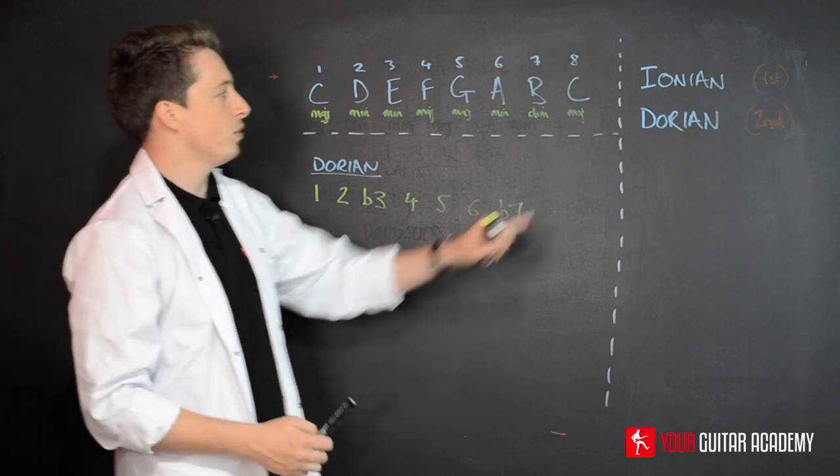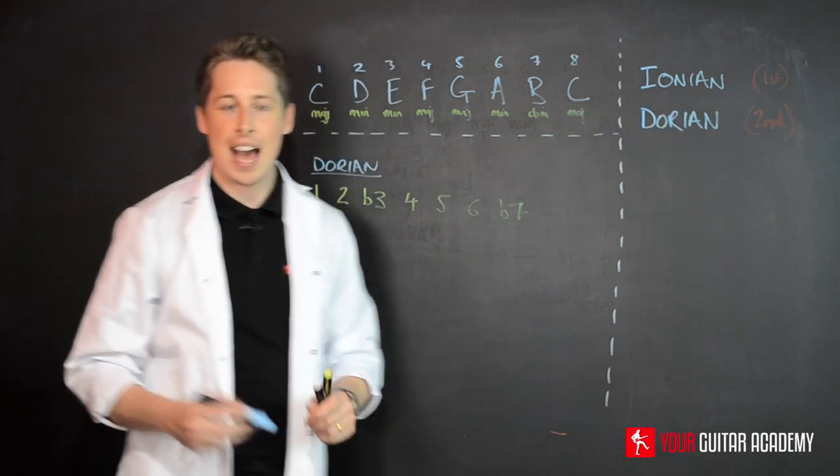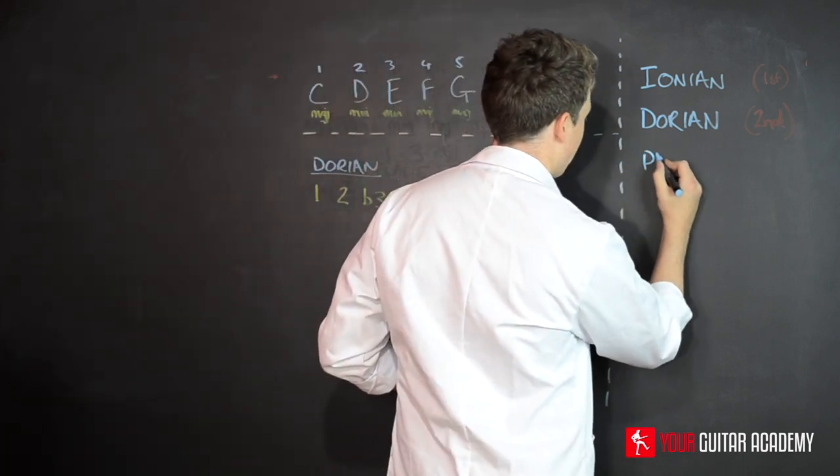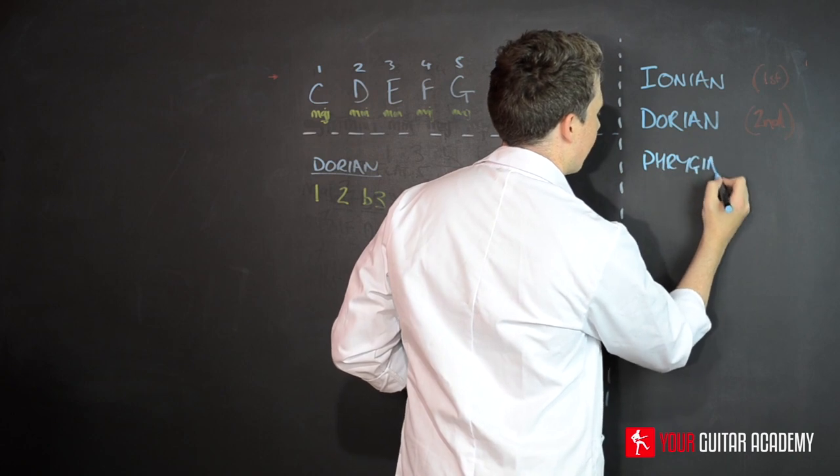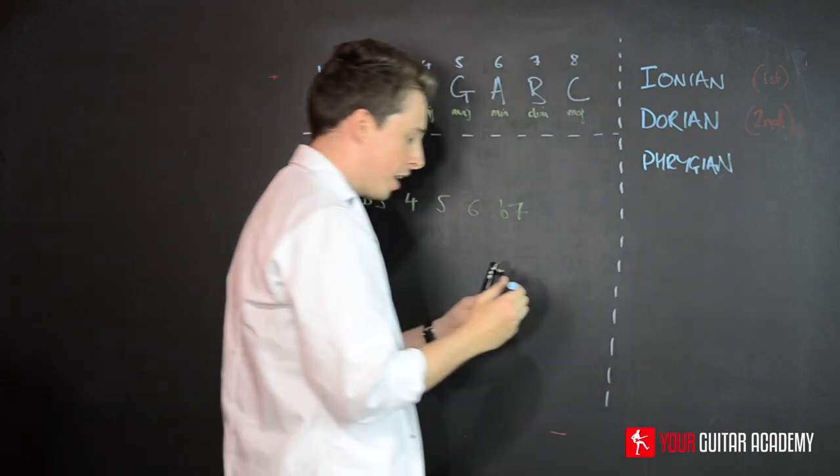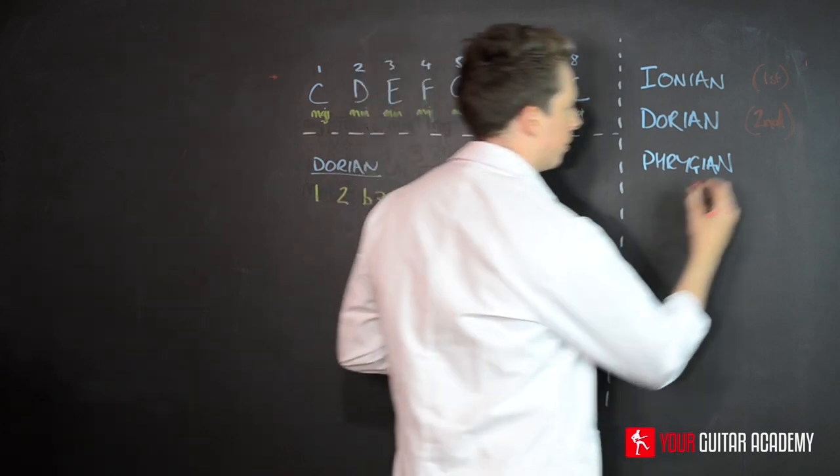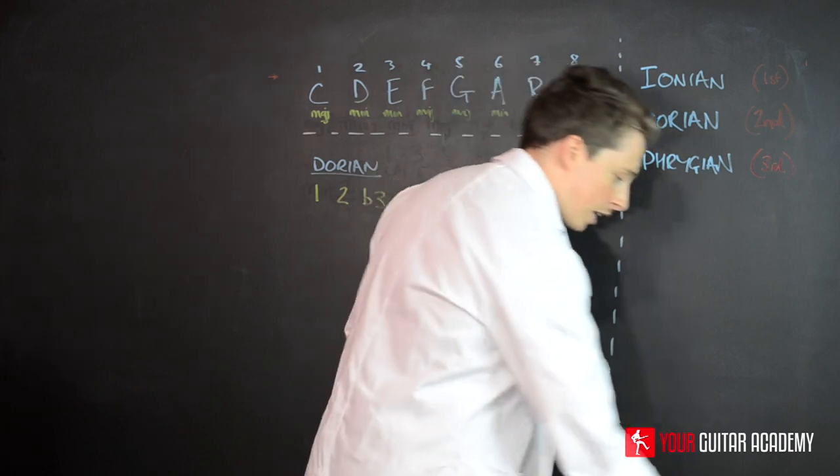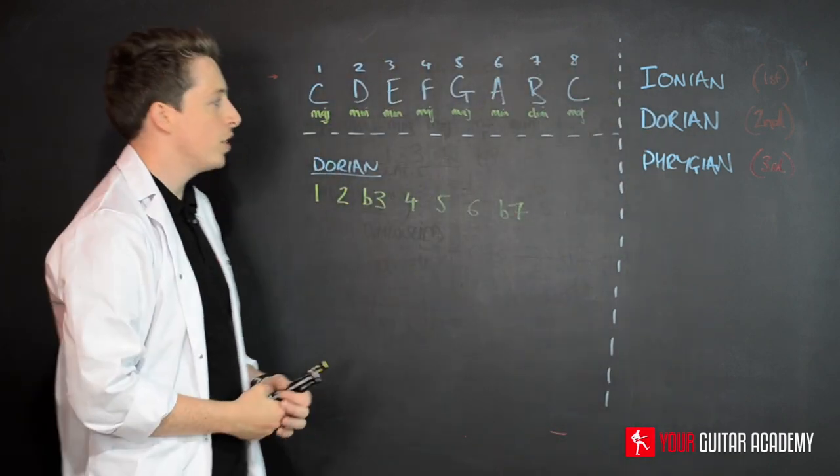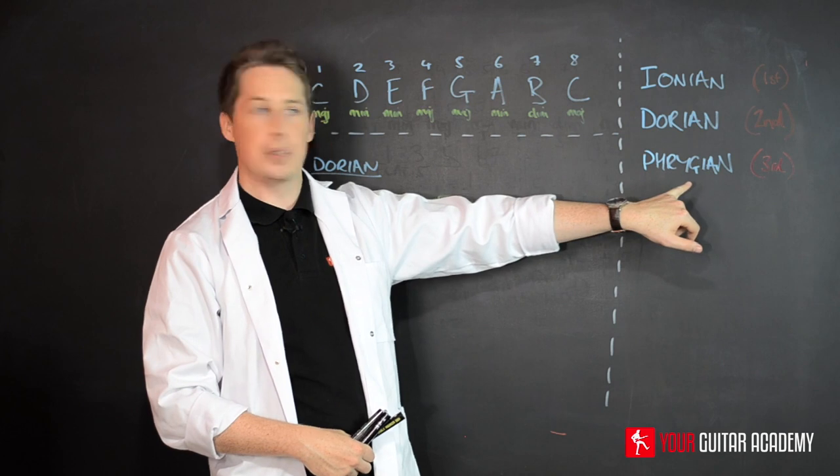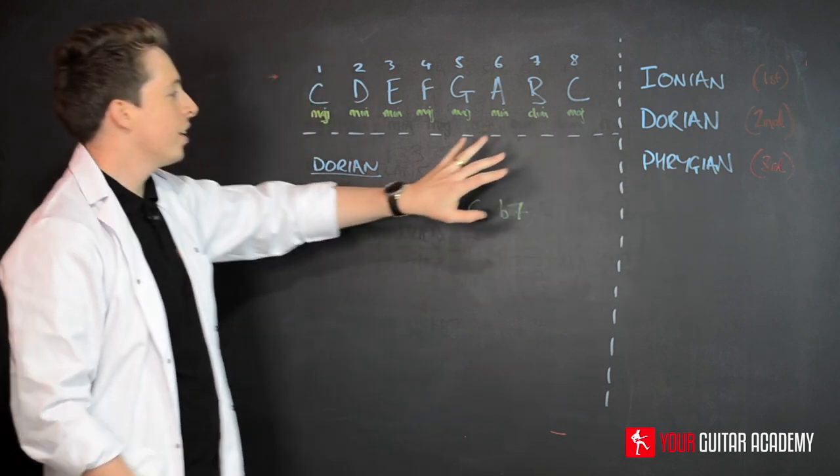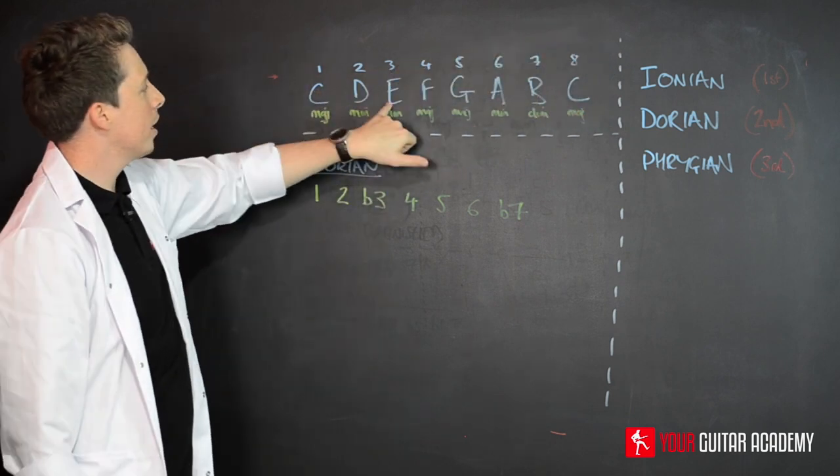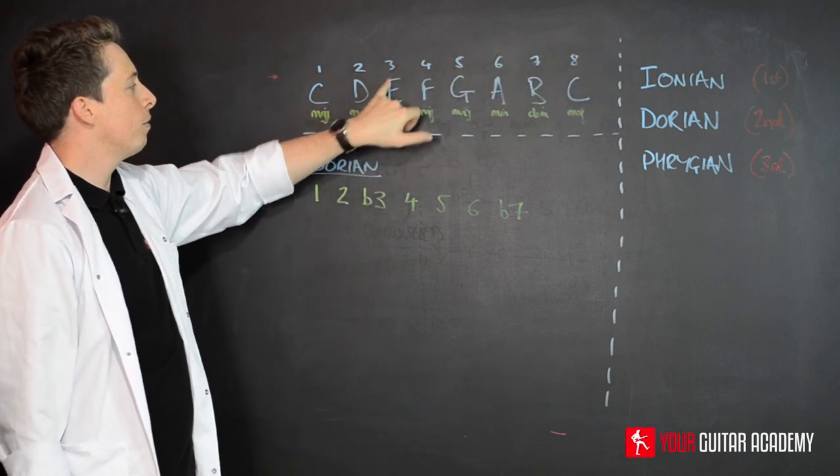Today we're going to add to our list of two modal scales and learn something called the Phrygian mode. I'm going to write this down, and I hope I'm spelling this correctly - Phrygian. That is the third mode. A couple of things to bear in mind: Phrygian is a tricky name to remember, so spend some time with that. Bringing it over to the original major scale, it's the third one along. So in this instance, E Phrygian.